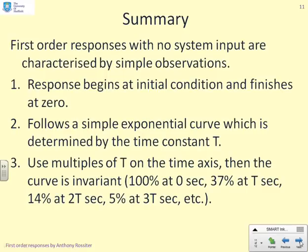So in summary, first-order systems with no inputs are characterised by a very simple observation. The response begins at the initial condition and finishes at 0. It follows a simple exponential curve determined by the time constant T. You can use multiples of T on the time axis, and then the curve is invariant: 100% at 0 seconds, 37% at T seconds, 14% at 2T seconds, 5% at 3T seconds.